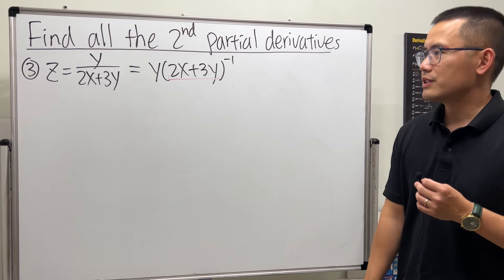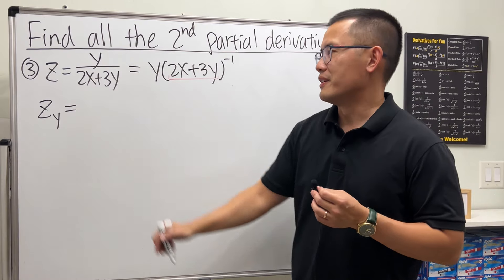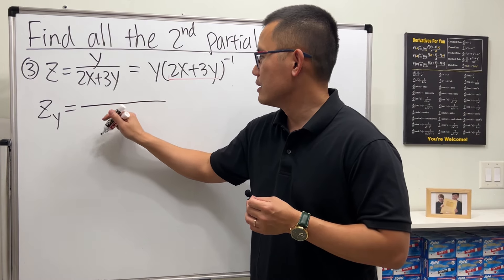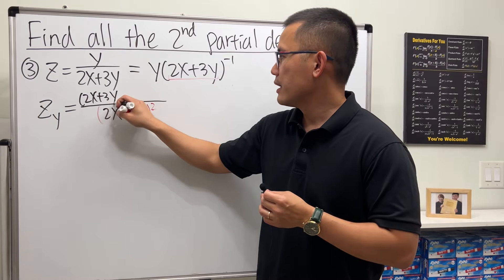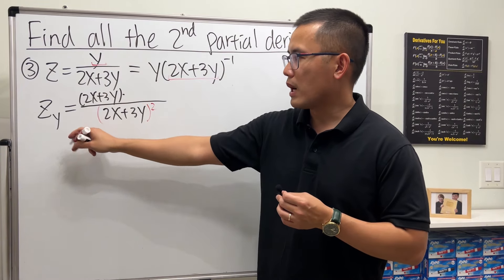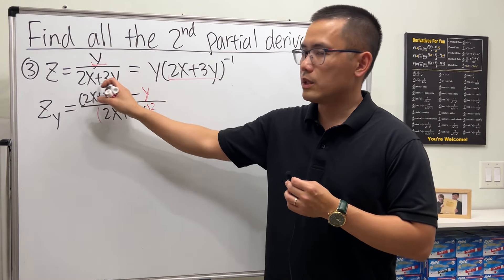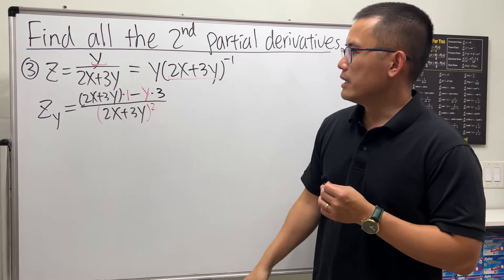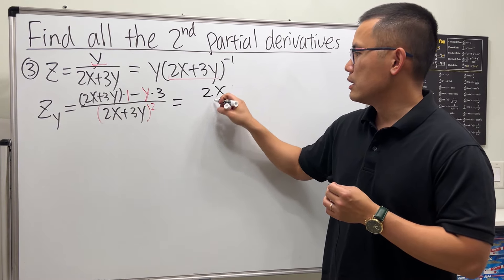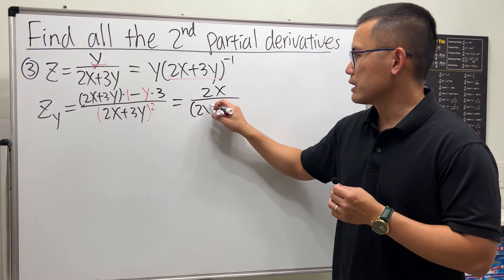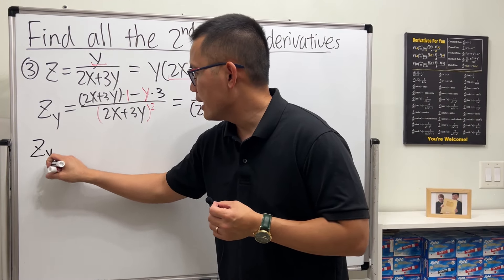Now let's find zy first so we can compute zyx. Using the quotient rule on z equals y over (2x + 3y): square the denominator to get (2x + 3y) squared. The bottom times the derivative of the top with respect to y gives (2x + 3y) times 1, minus the top y times the derivative of the bottom with respect to y, which is 3. Simplifying, 3y minus 3y is zero, leaving 2x on top, so zy equals 2x over (2x + 3y) squared.